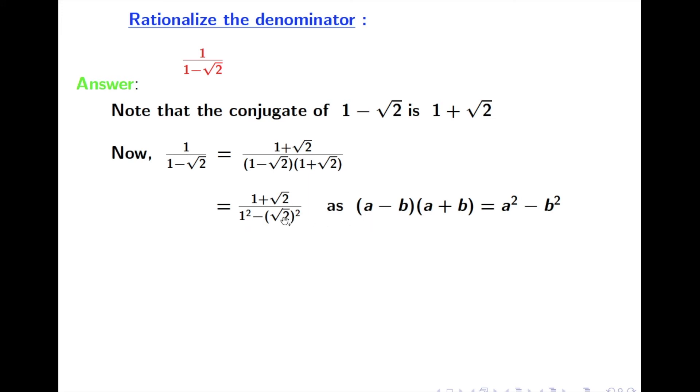Now let's simplify it and we get 1 plus root 2 by 1 minus 2. That means we get 1 plus root 2 by minus 1. And simplifying it we get minus 1 plus root 2, that means minus 1 minus root 2.